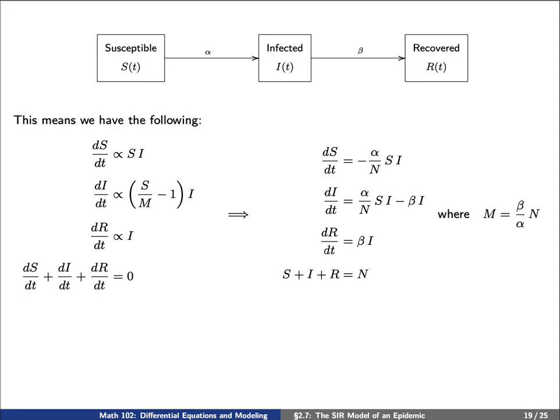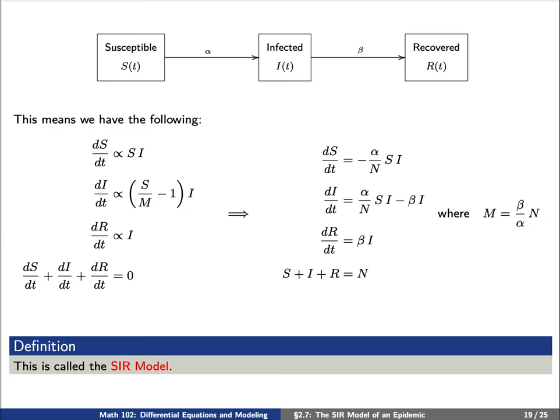Introducing the constants of proportionality, alpha and beta, we can write dS/dt equals negative alpha over N times S times I. We can write dI/dt as alpha over N times S times I minus beta times I. dR/dt equals beta times I. And S + I + R equals N, where M, our threshold, is equal to beta over alpha times capital N. This is called the SIR model.